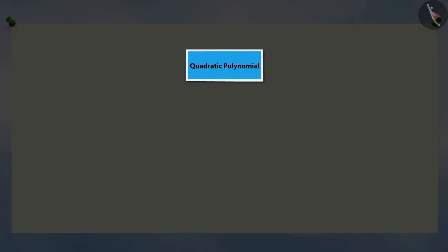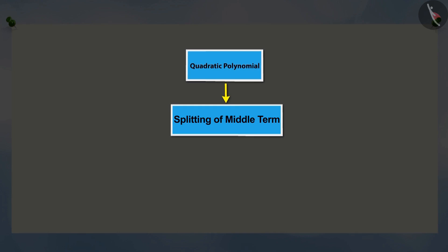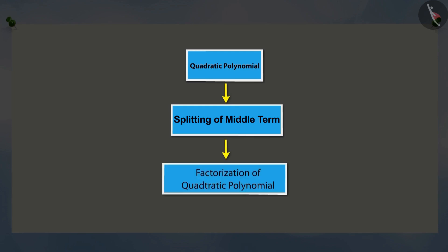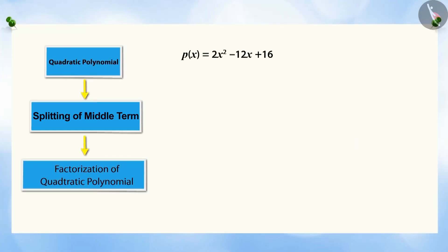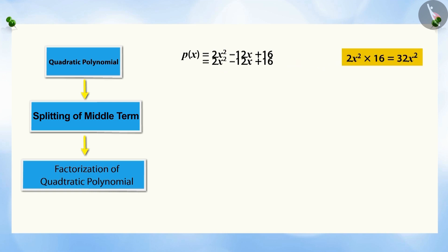Do you know that by splitting the middle term of a quadratic polynomial, it can be factorized? For example, the polynomial is 2X squared minus 12X plus 16. The term minus 12X is written as the sum of two such terms whose product is 32X squared. On further solving, we get the factors of this polynomial.